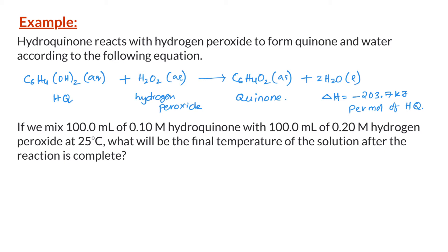If we mix 100 milliliters of 0.1 molar hydroquinone with 100 milliliters of 0.2 molar hydrogen peroxide at 25 degrees Celsius, what will be the final temperature of the solution after the reaction is complete?